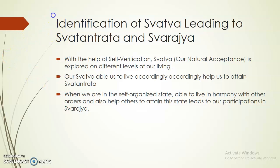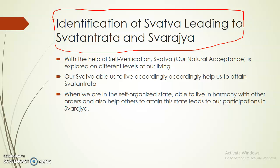We have already covered the identification of swatva at the start of self-exploration, and we are revising it again now. To develop ethical human conduct, we need swatva. How does swatva come? When you explore things with the help of your natural acceptance at the four levels of living — self, family, society, and nature — and live accordingly, that is called swatva.